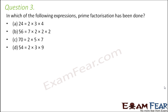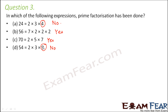Question 3: In which of the following expressions has prime factorization been done? First: 24 = 2 × 3 × 4 — prime factorization is not done because 4 is not a prime number; it is a composite number. Second: 56 = 7 × 2 × 2 × 2 × 2 — 7 and 2 are both prime numbers, so yes, prime factorization is done. Third: 70 = 2 × 5 × 7 — all prime numbers, so prime factorization is done. Fourth: 54 = 2 × 3 × 9 — prime factorization is not done because 9 is not a prime number.